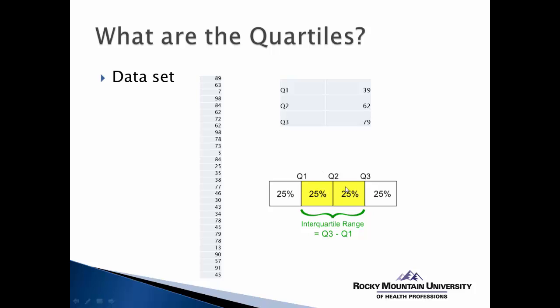Looking at the graphic, we can see that each of the quartiles divides the distribution of scores up into quarters. Between 0 and 39 — the first quartile score — represents 25% of all the scores. The range of scores between 39 and 62, between the first and second quartile, represents another 25%.